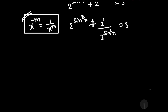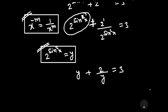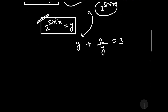Now let us consider 2 to the power sin²x is equal to y. Putting this value into the above equation, we get y plus 2 by y is equal to 3. We have substituted 2 to the power sin²x as y, so the equation reduces to y plus 2 by y is equal to 3.